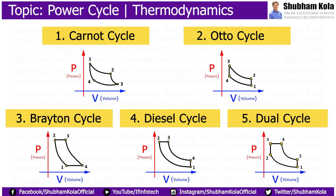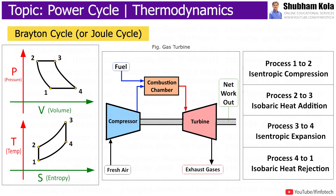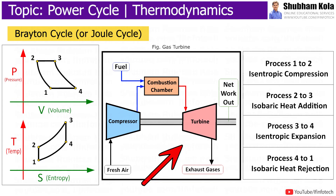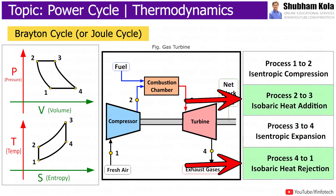In this video, we are going to learn about the Brayton cycle, or Joule cycle, which is the thermodynamic cycle upon which gas turbines work. Gas turbines are used to generate power, found in power plants or airplanes. The Brayton cycle consists of four thermodynamic processes: two adiabatic and two constant pressure processes.